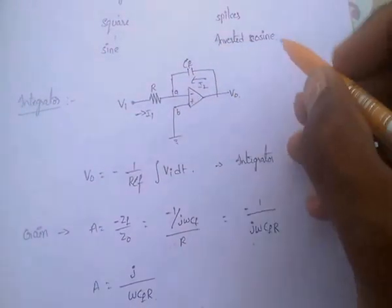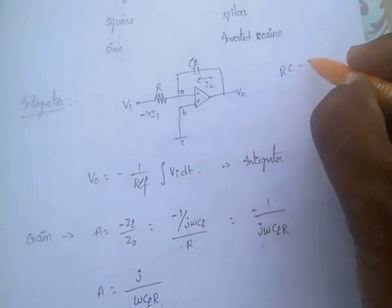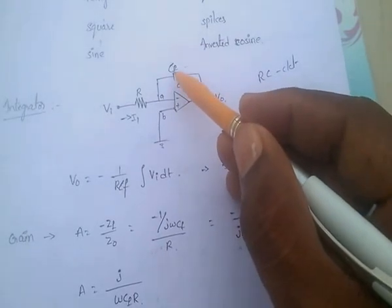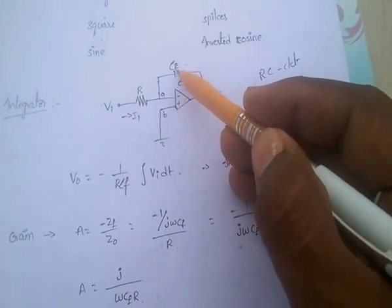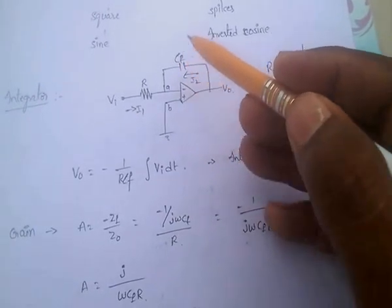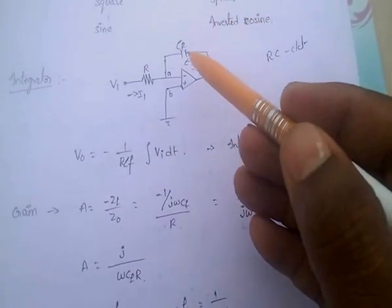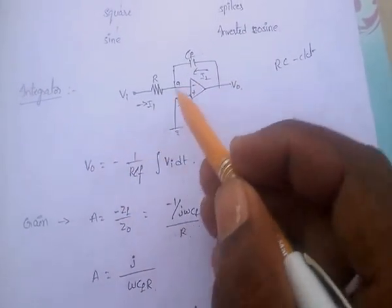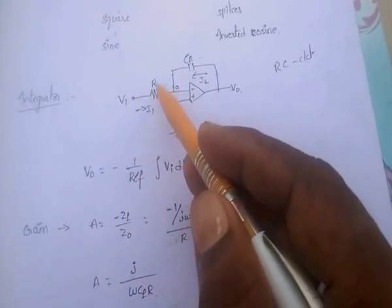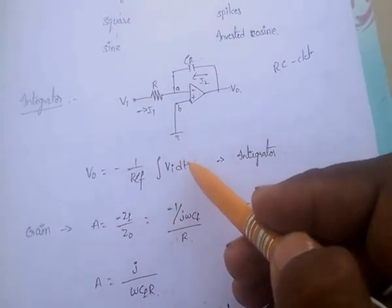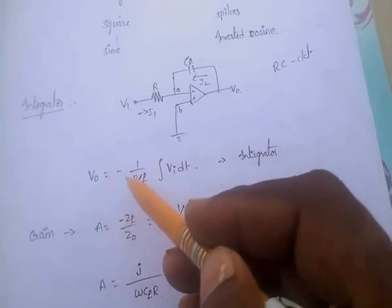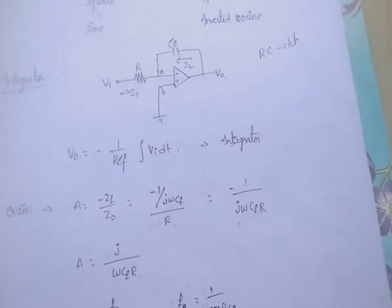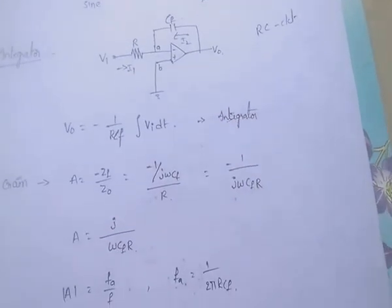Coming to the integrator circuit — that is RC circuit. Integrator is nothing but RC. In case of integrator, the feedback element is capacitor; in case of differentiator, feedback element is resistor. The output V0 equals minus 1/(RCF) integral of Vi dt. V0 is proportional to integral Vi dt — so it is called integrator.